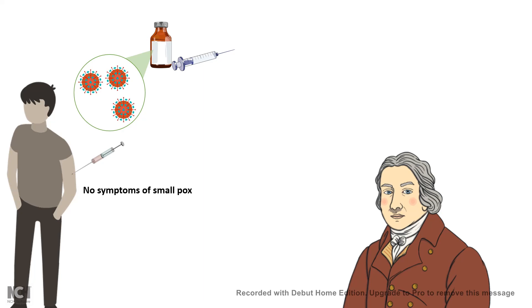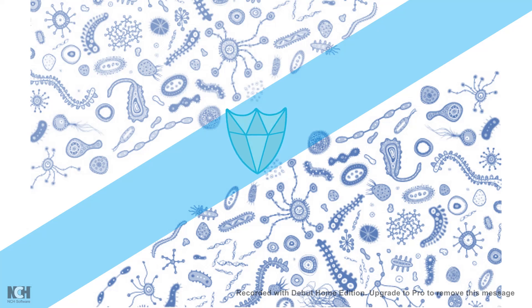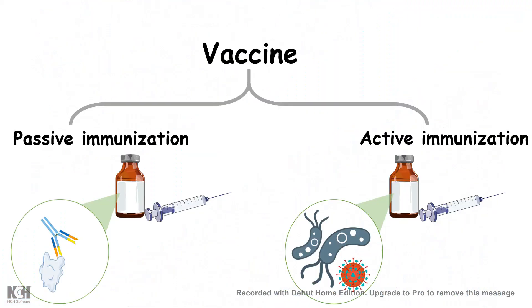From that, the initial concept or initial foundation of vaccine was actually formed. Now, vaccination gives us protection from all kinds of viral attacks or pathogenic attacks. Let's see how it works. Vaccines can be roughly divided into two different strategies of immunization.